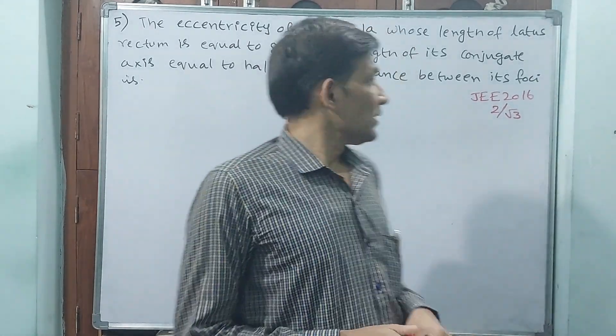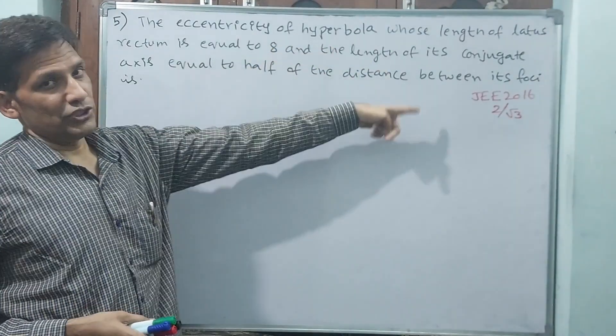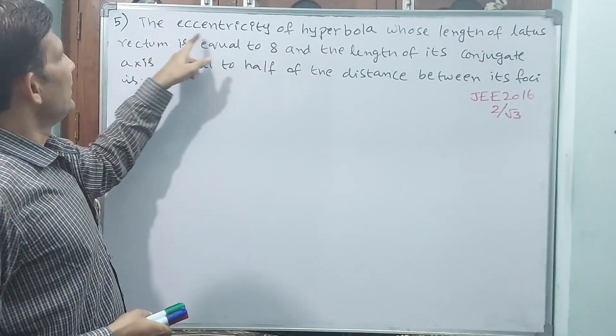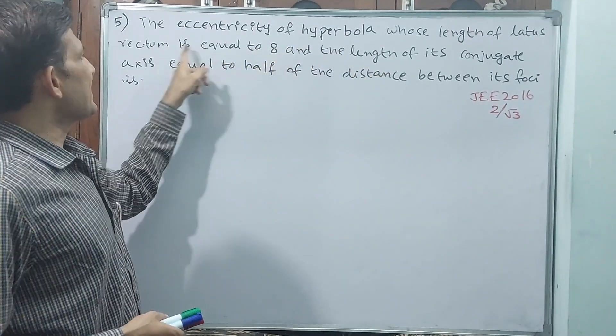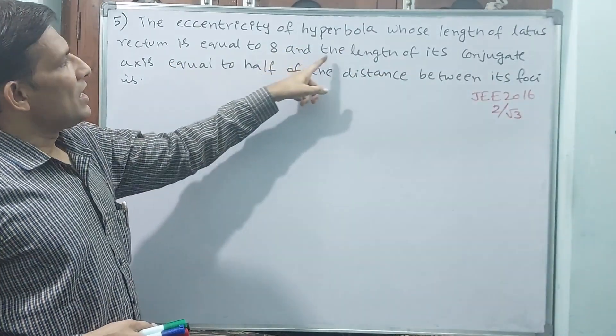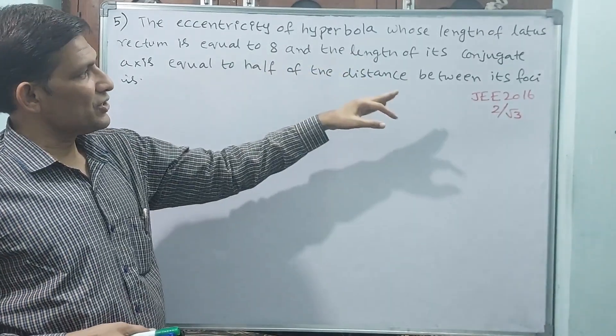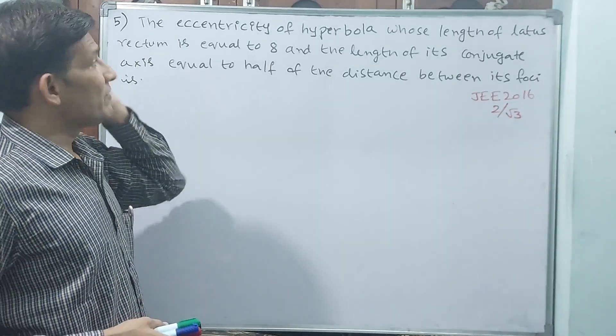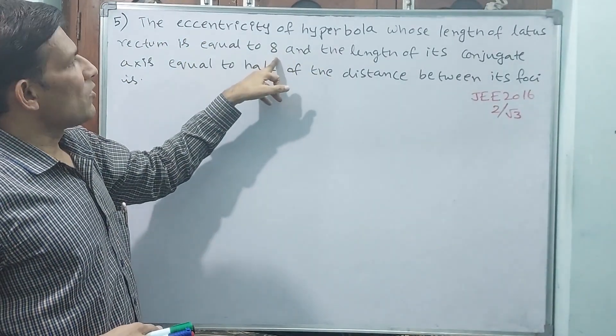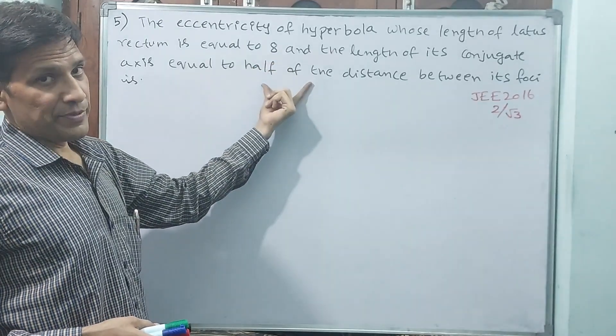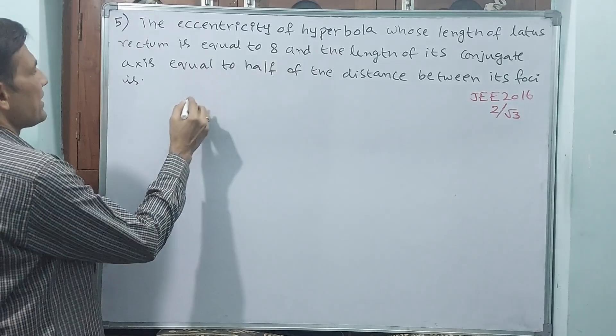Let us see what they have given. Question number 5, asked in 2016 JEE. The eccentricity of hyperbola whose length of lateral rectum is 8 and length of its conjugate axis is equal to the half of the distance between its foci. That means finally we have to find eccentricity. Only one value is given and the third one is a relation.